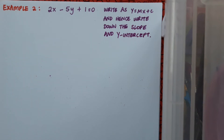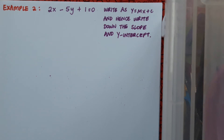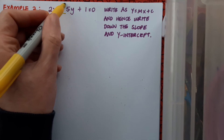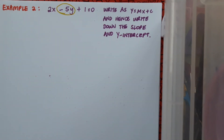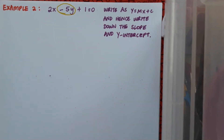Let's look at a second example. This time we have the line 2x minus 5y plus 1 equals 0, and again we want to write it in the form y equals mx plus c and hence write down the slope and y-intercept. The key thing to note here is that the y term is negative, and I'd really prefer my y to be positive. I can fix that by bringing the y over to the right-hand side of the equation, giving me 2x plus 1 equals 5y.